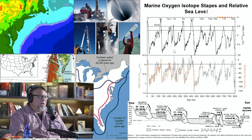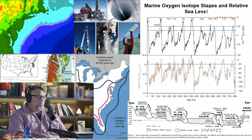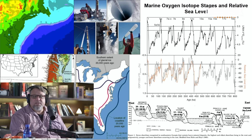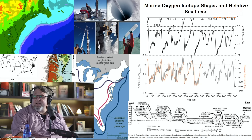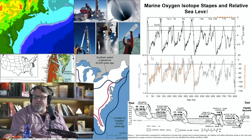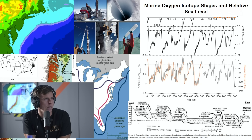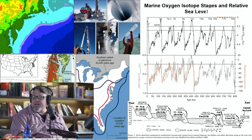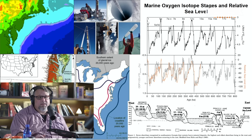This image shows the ice ages — marine oxygen isotope stages and relative sea level. This is where we are currently, and this is where we were at the peak of our last ice age, 20,000 years ago. The lower line is sea level; the upper line shows oxygen isotopes from the ice cores — yes, oxygen isotopes.